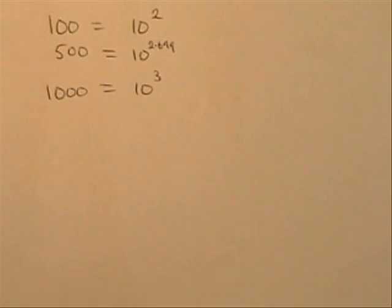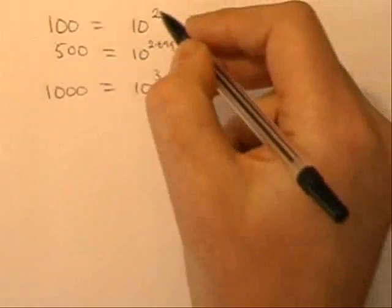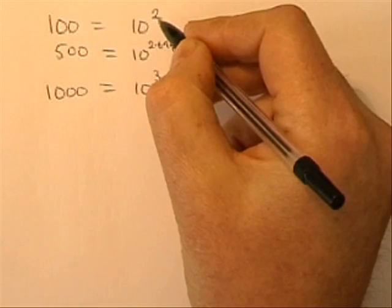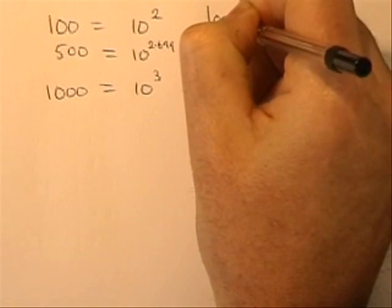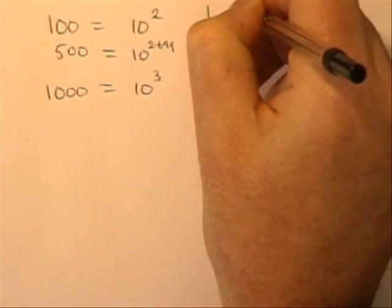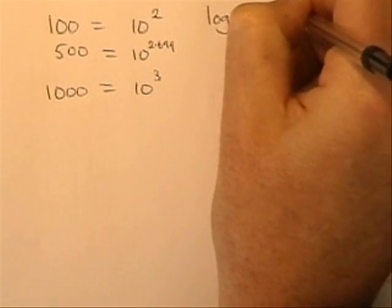And it's a real mouthful to have to say the power you use with 10 to get. So that's why we just have a name for it. Instead of calling 2 the power you have to use with 10 to get 100, we call it the log. Strictly speaking, the log to base 10 of 100. That's what we call 2.